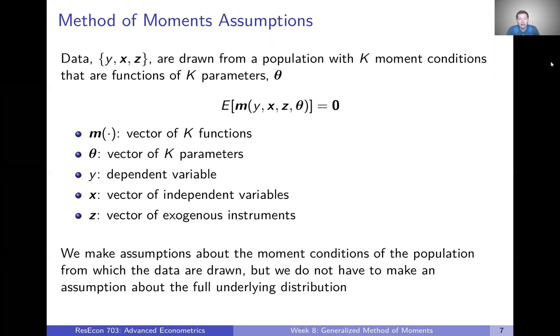Those data are drawn from a population with k-moment conditions that are functions of k-parameters. So we're going to say there are k different functions of data and parameters that we can write down. We're going to have k-parameters in those various moment conditions. We could have one or more than one in each moment condition, but in total, we should have k-moment conditions and k-parameters, and in expectation, each one of those moment conditions equals zero.